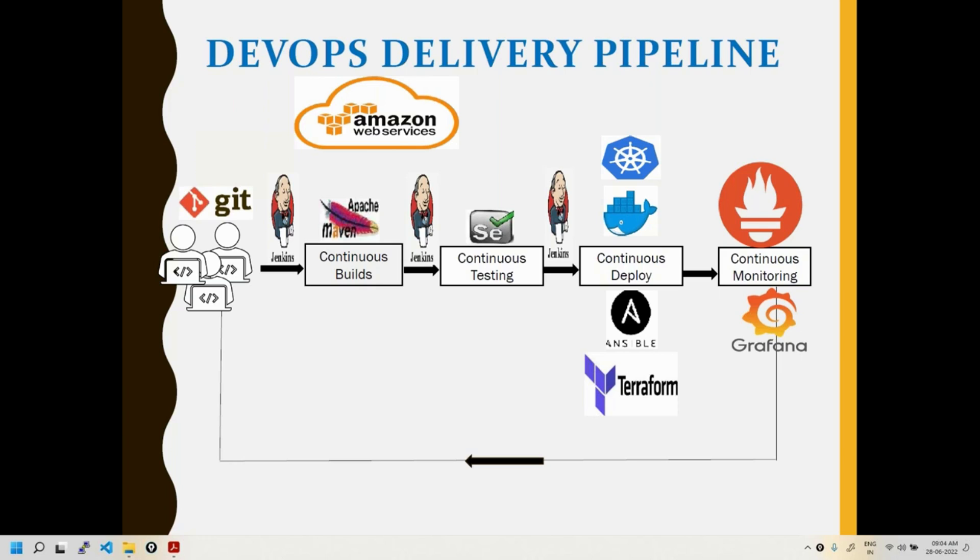On the question of whether DevOps will eliminate the ops team: it depends. If infrastructure is on-prem, companies still maintain a separate ops team for that infrastructure. If infrastructure is on cloud, the DevOps team typically handles it, and there is generally no separate ops team — that's the current trend.